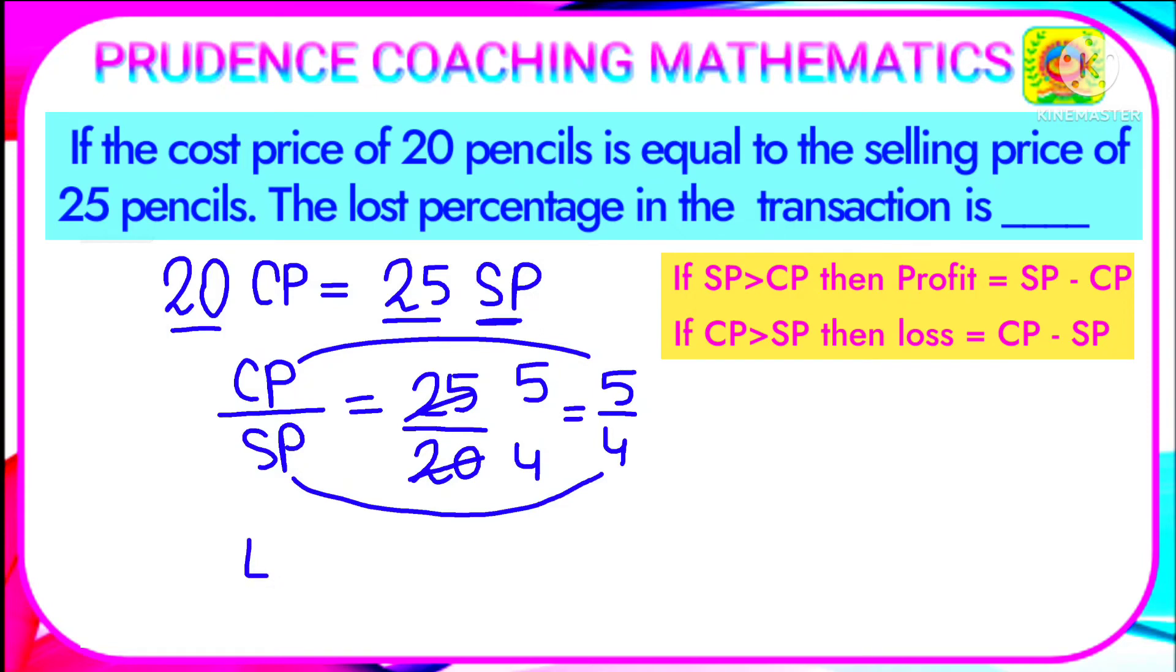Loss is CP minus SP, that is one unit is loss. To find out the loss percentage, you need to write loss by CP. Here CP is 5 units, so it's 1/5 × 100. You will get 20 percent as your final answer.